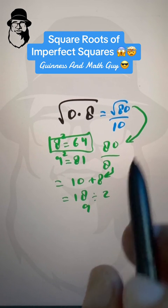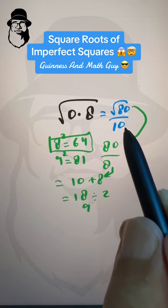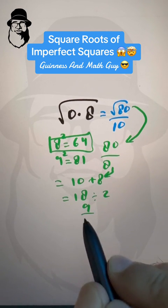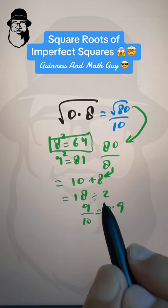And, we have 9 as the answer, and we'll divide it by 10 here to get 0.9, and that's our approximate answer.